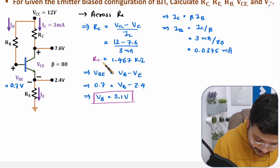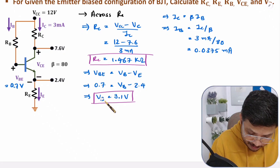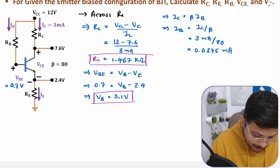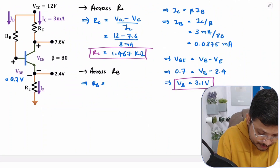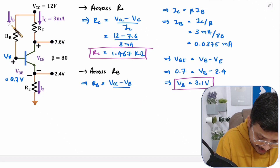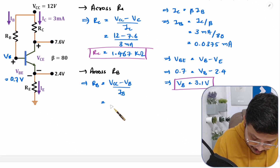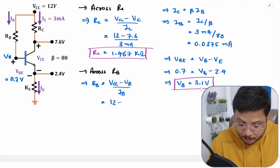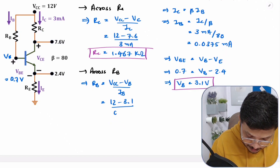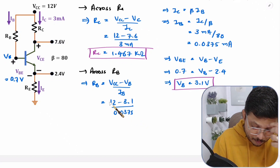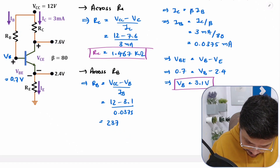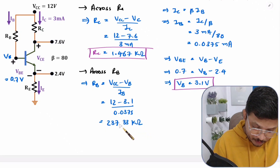Based on VB and IB, one can calculate RB. Across RB, the potential difference is VCC − VB, divided by current IB. So RB = (VCC − VB) / IB = (12 − 3.1) / 0.0375 mA. Solving this gives RB = 237.33 kΩ.